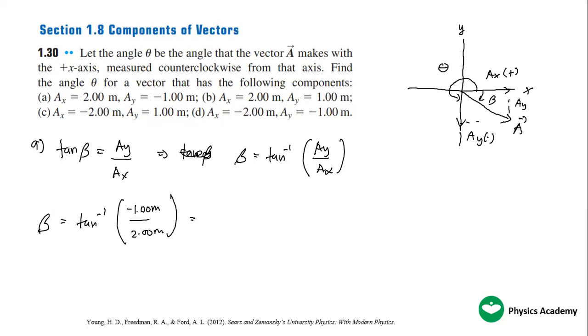Let's try to calculate this one. Shift tangent of negative 1.0 over 2.0. This is actually negative 26.6 degrees.